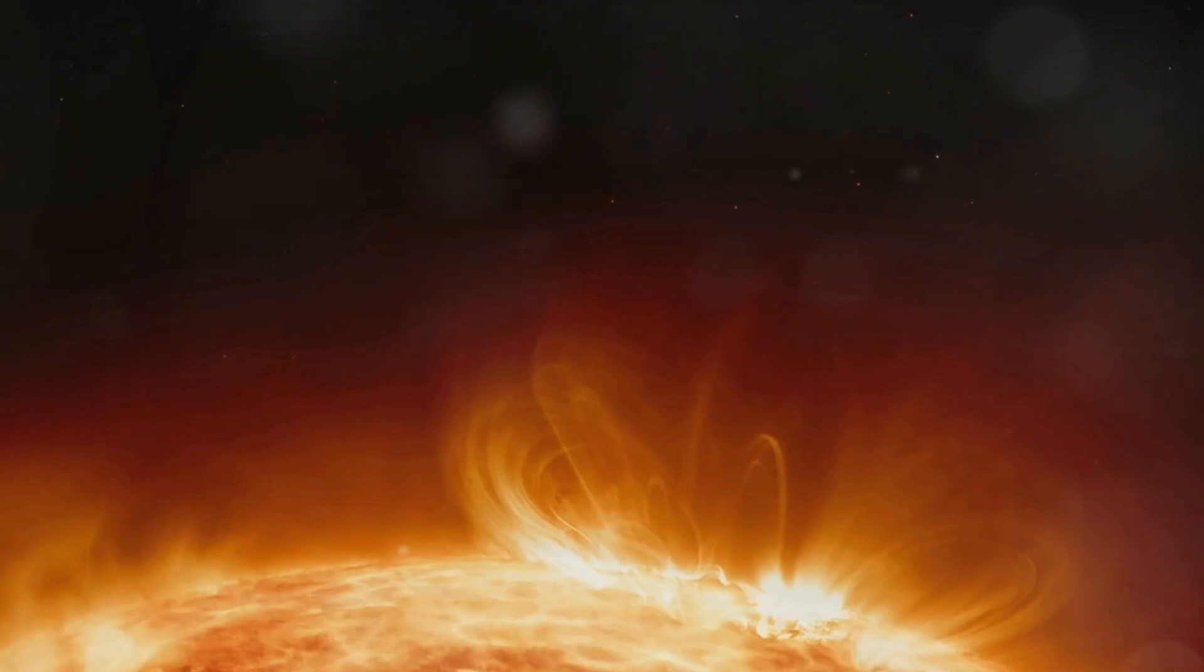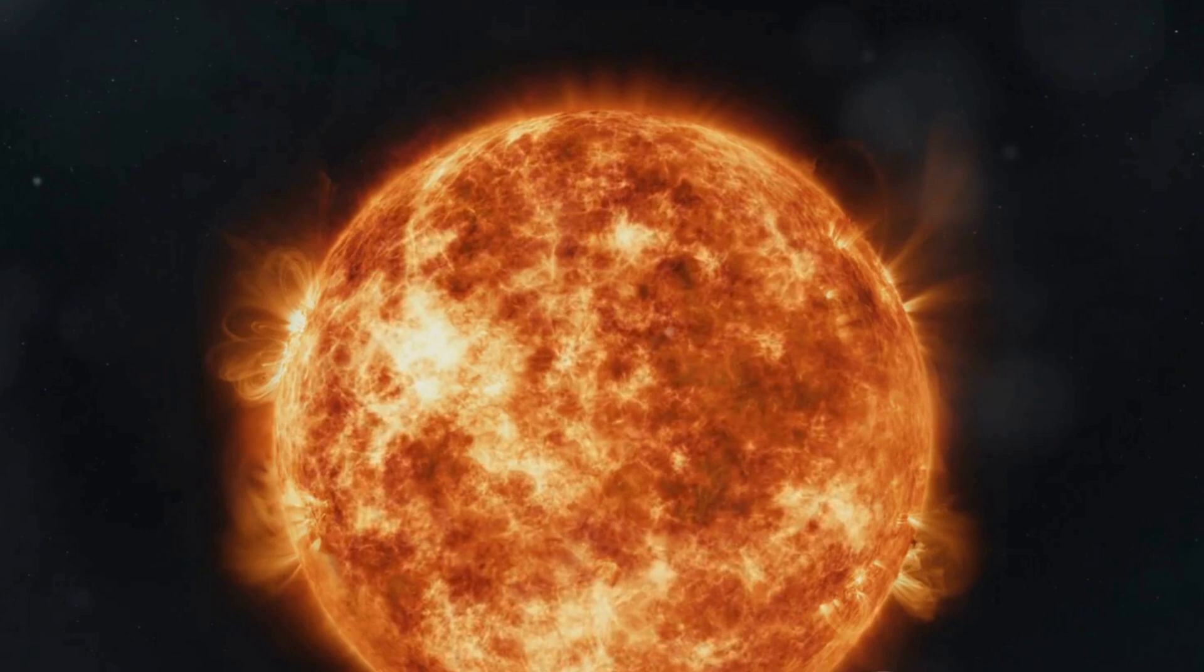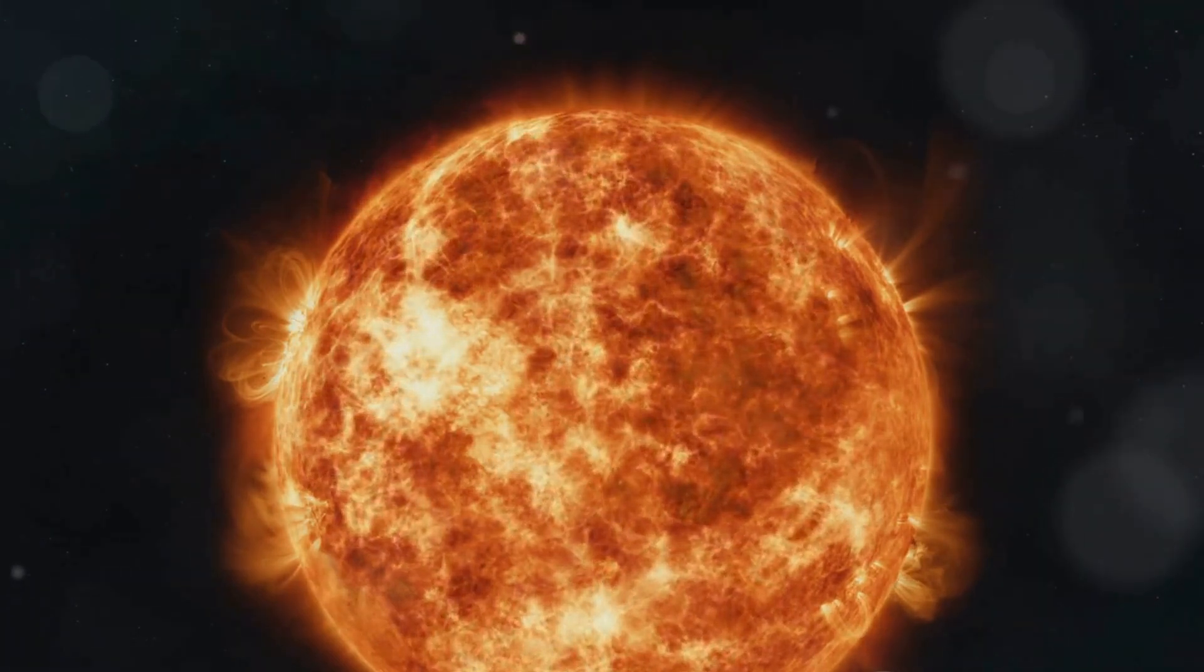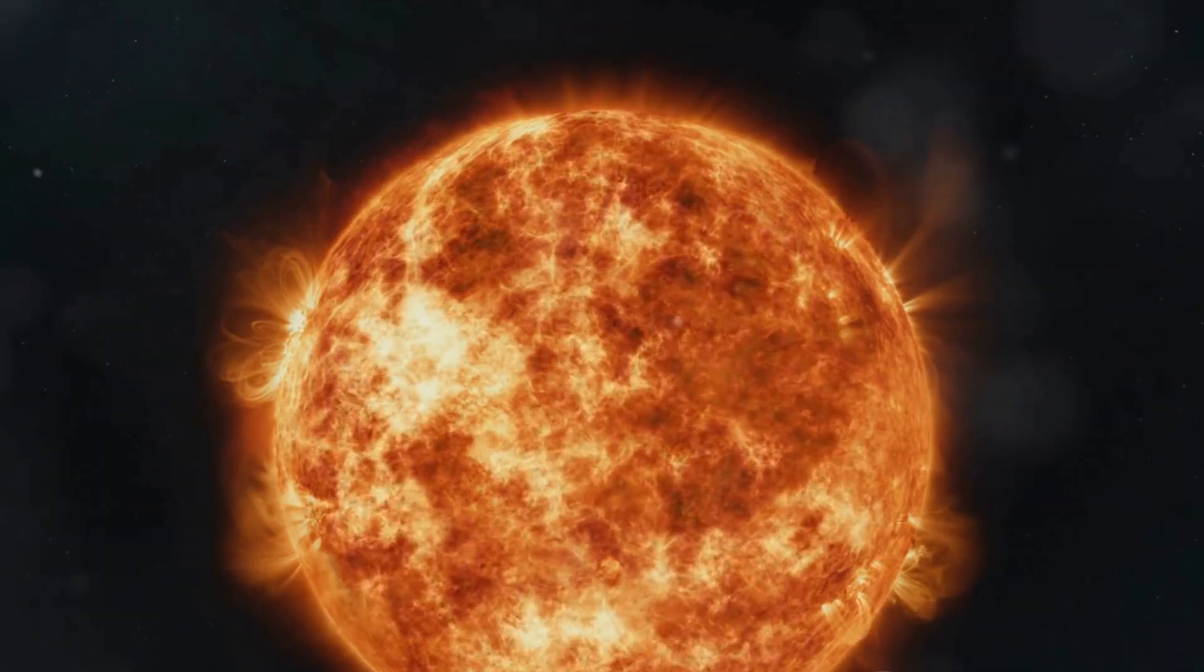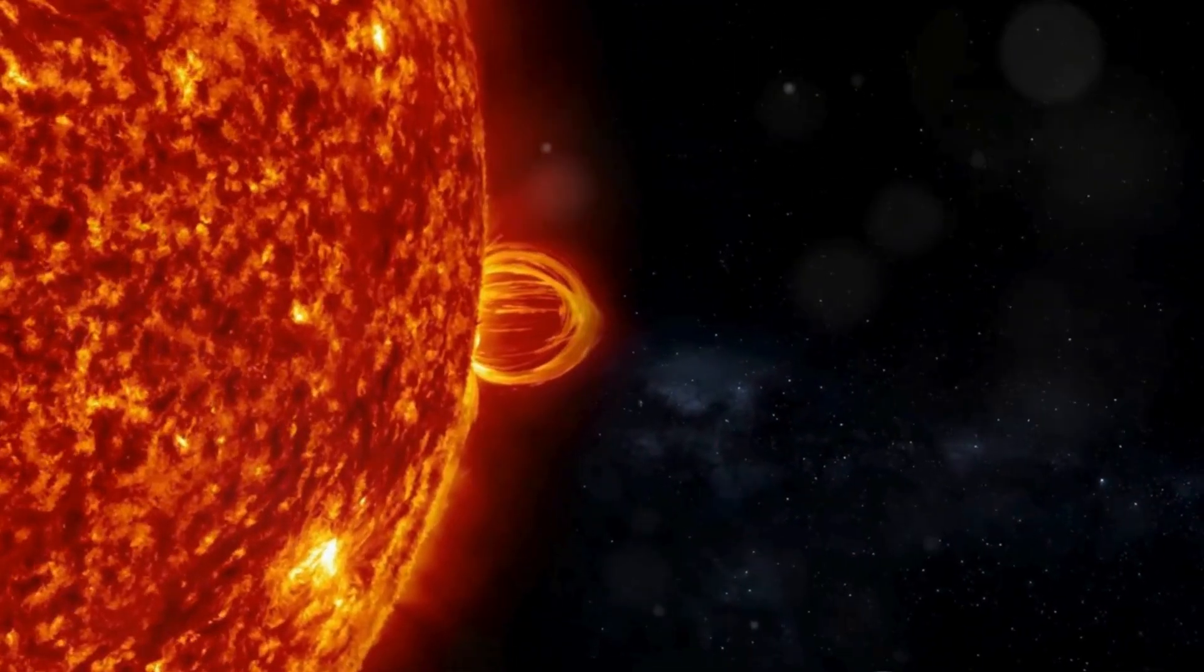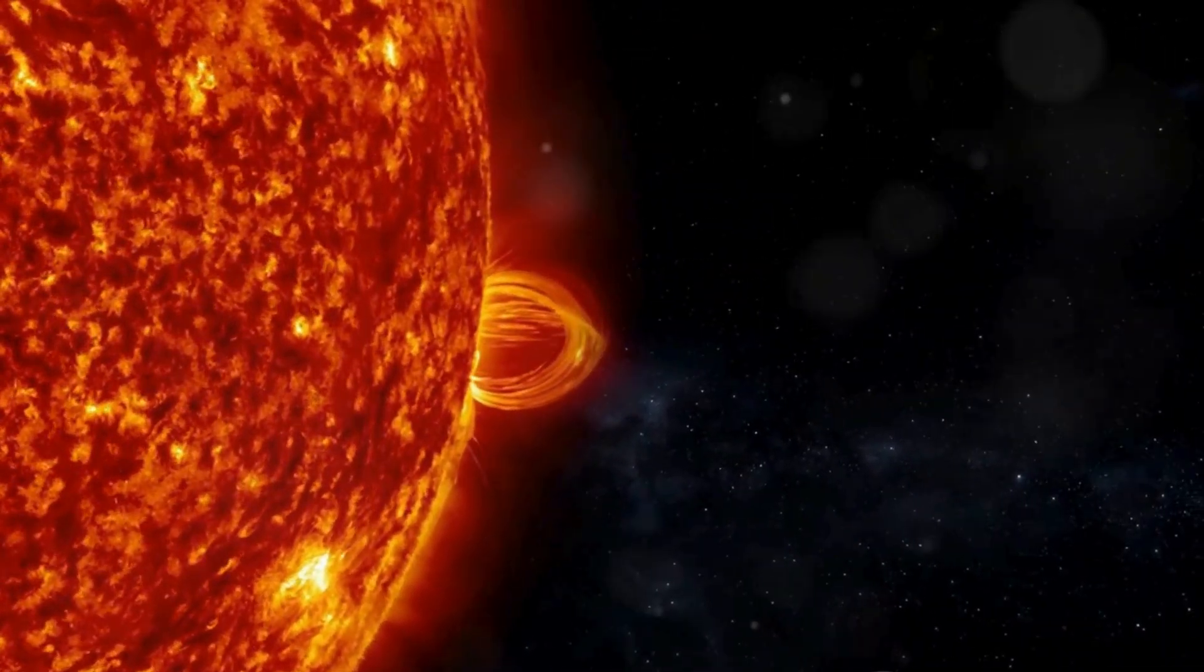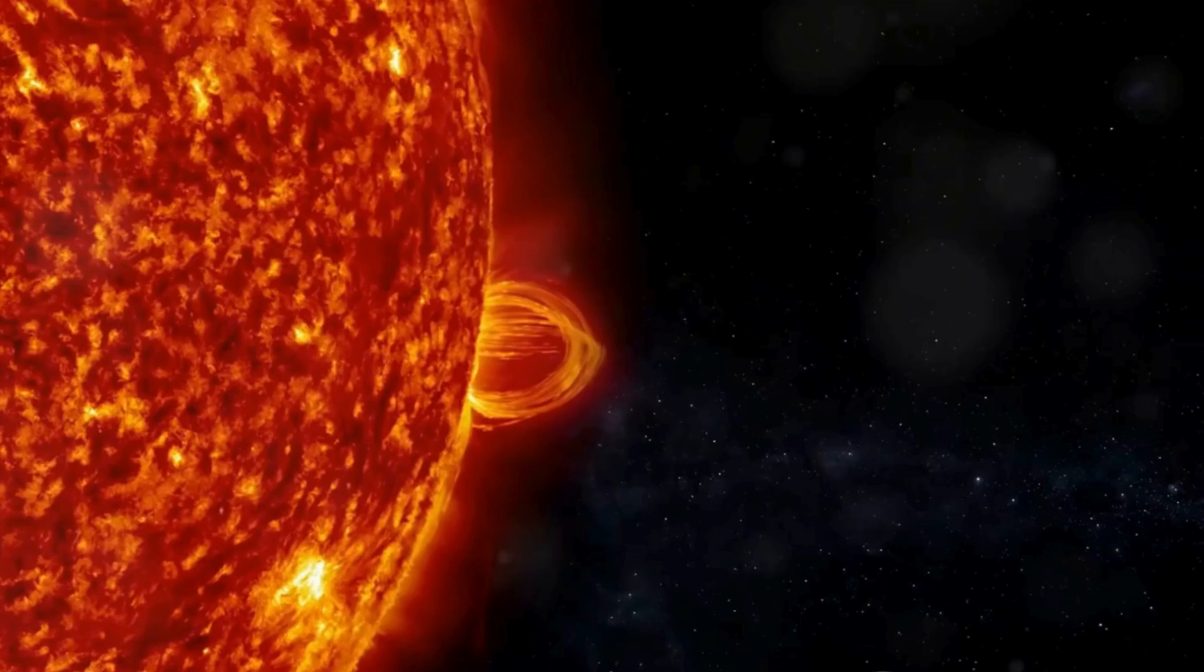Now you might be wondering what exactly makes these solar outbursts so potent. The answer lies in what we call a solar storm. A solar storm is a mighty eruption on the Sun's surface, a violent release of energy that can send charged particles hurtling towards our planet at incredible speeds. Imagine these particles reaching Earth, a world so dependent on technology.